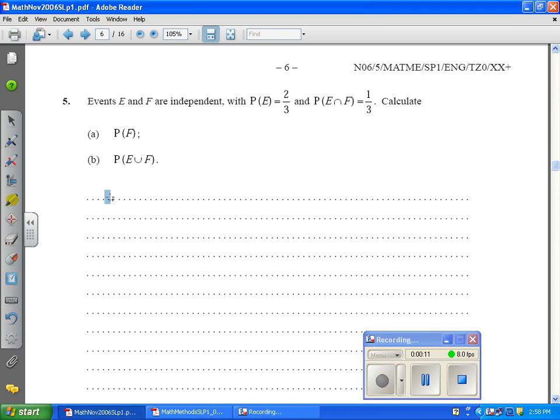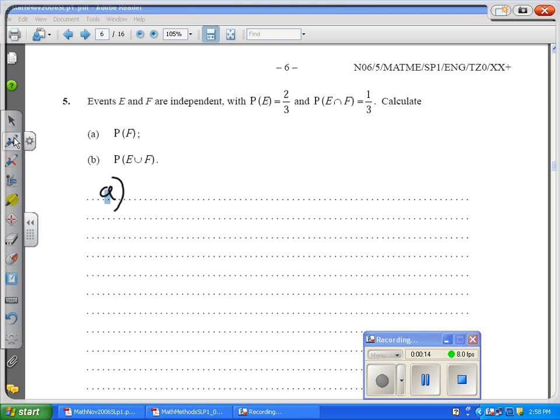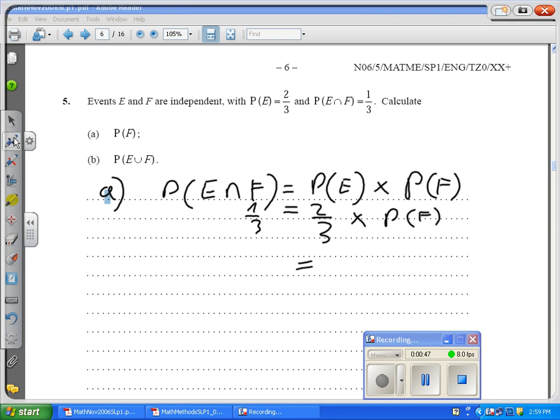So for number A, we need to use the formula P(E∩F) = P(E) × P(F), which gives us, this is given, 1/3, and here we have 2/3 multiplied by P(F), which gives us P(F) = 1/3 × 3/2, which we can cancel out, and which gives us P(F) = 1/2.